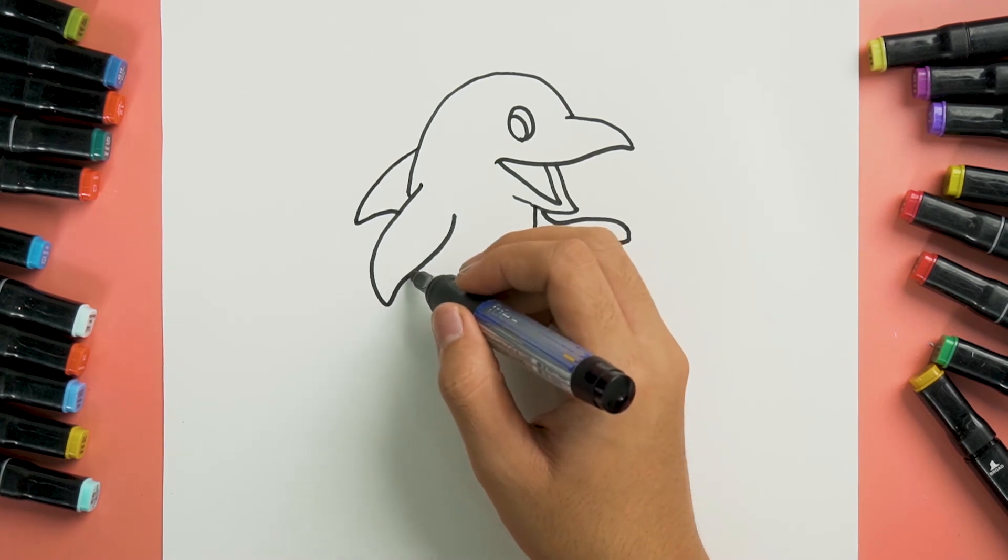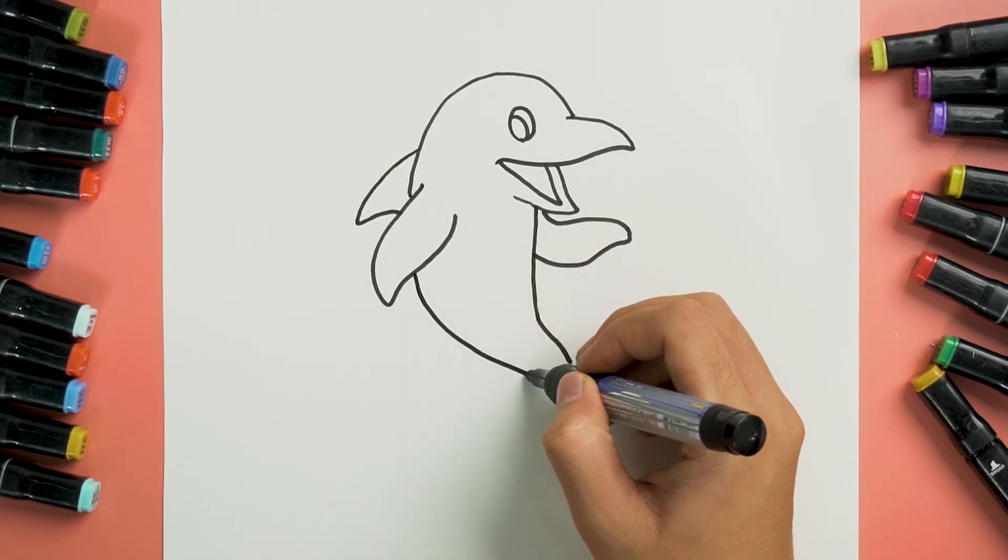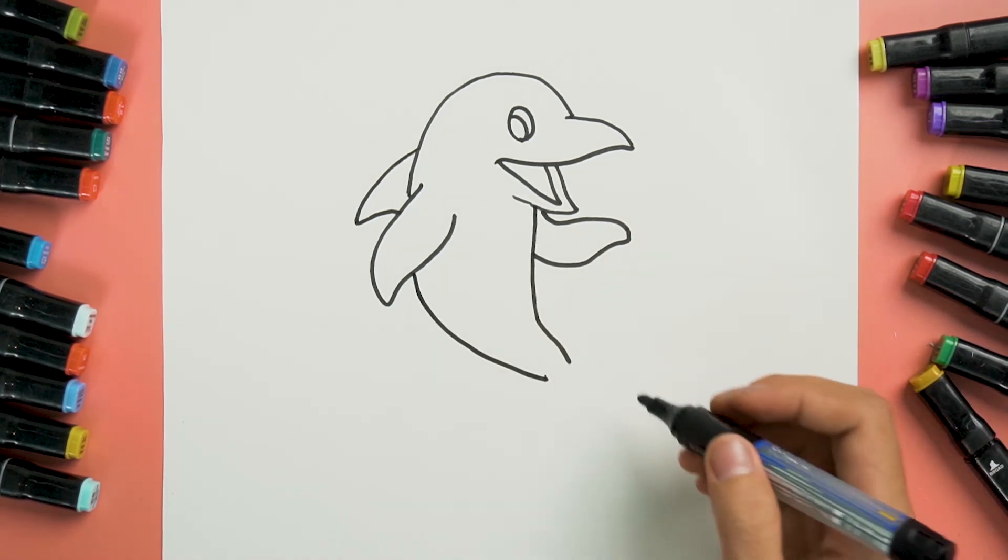We will draw another side of his body by drawing a line from here to here. Make sure that there is space.